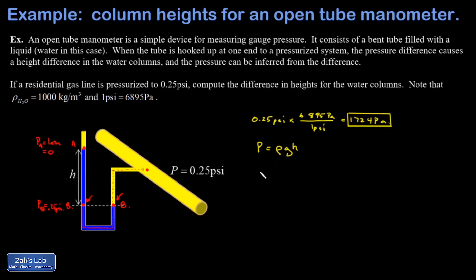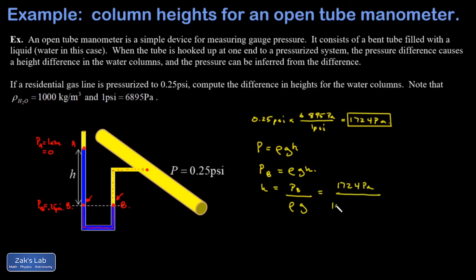I know the pressure at point B and what I'm looking for is the height h — how much depth does it take to create 0.25 psi of pressure? Plugging in: pressure = 1,724 pascals, density of water = 1,000 kilograms per cubic meter, and g = 9.8 meters per second squared. I get 0.176 meters, which looks nicer as 17.6 centimeters.